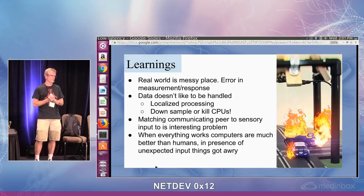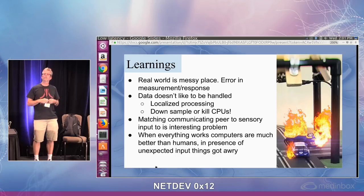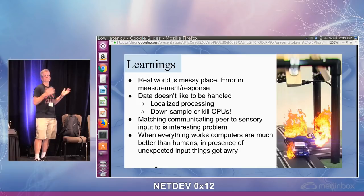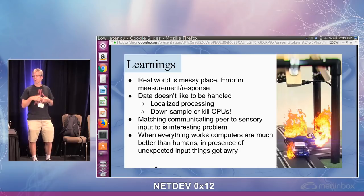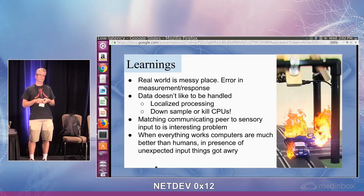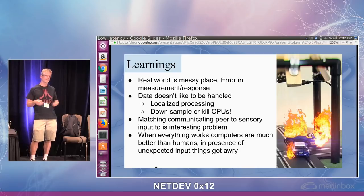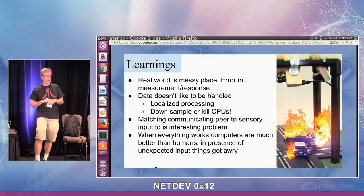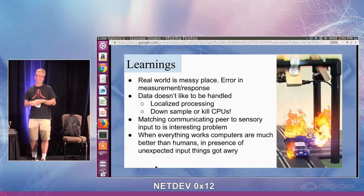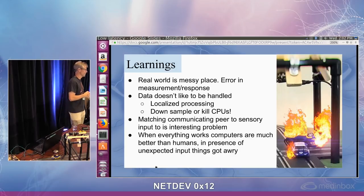An interesting networking problem is matching who you're talking to with who you're looking at. In the data center, we don't care about the location of the server. But here, if I see an accident about to happen and I want to alert a vehicle, I have to know not only that I'm communicating with that vehicle, but that I have secure communication. How do I know exactly who I'm talking to? Even if they say their GPS location is X, Y, Z — do I trust them? When everything works, computers are way better than humans at something like this. But in the presence of unexpected things, major accidents happen. Many virtual lives have been given for this demo.